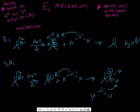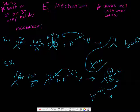The final SN1 product is a tertiary alcohol with an OH group. So those are our two products in this reaction. Since we are using heat, the alkene from E1 is our major product. Now let's do a harder example.